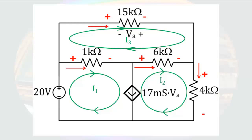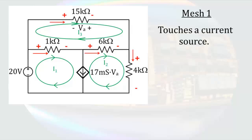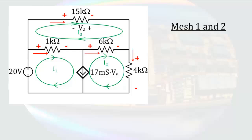With the four voltages indicated, I try to look at mesh 1, but it includes a current source. Since I don't have a relationship between the voltage and current of a source, I cannot write a KVL loop around the first loop. The second mesh current also touches the same source, so I cannot write a useful KVL loop around the second loop either. However, we can look at mesh 1 and mesh 2 together and get two equations. From the current source, I1 goes in the same direction as the source and I2 goes in the opposite direction, so 17mS times VA equals I1 minus I2. We can then go around the outside of the combination — a supermesh — and by KVL the voltages must add to zero.